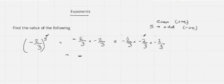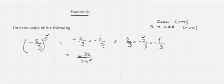Now computing the value: 2 times 2 is 4, 4 times 2 is 8, 8 times 2 is 16, 16 times 2 is 32. So the numerator is 32. For the denominator: 3 times 3 is 9, times 3 is 27, times 3 is 81, and 81 multiplied with 3 is 243. So our answer is minus 32 by 243.